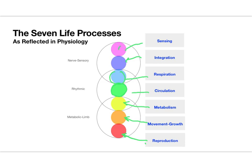The endocrine glands — the pineal, pituitary, thyroid, parathyroid, thymus, pancreas, adrenals, and reproductive organs (gonads, ovaries, and testes) — form a sevenfold there as well. Very interesting how these principles keep coming back: the threefolding and now the seven.